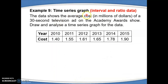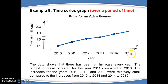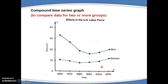Time series graph is used to represent interval and ratio data. We normally use this type of graph to analyze time series data. For example, we have year and cost, where the year is on the X axis and the cost is on the Y axis. You can also use a compound time series graph to compare data for two or more groups.